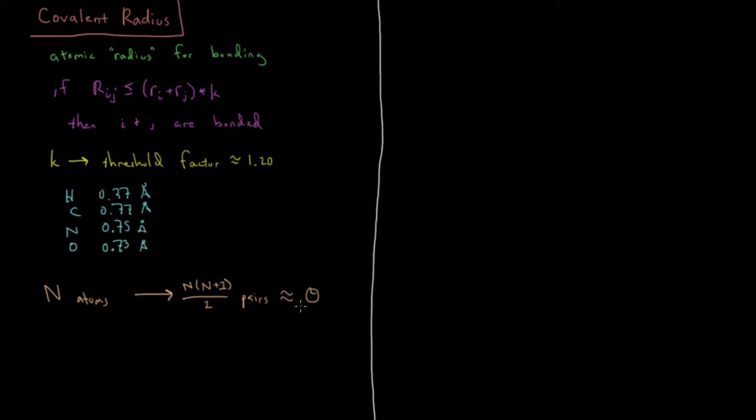Which means that we have in computer science notation order n squared pairs. As n gets very large, asymptotically the number of pairs scales quadratically with the number of atoms. If we have n number of atoms, we're going to have approximately n squared pairs.